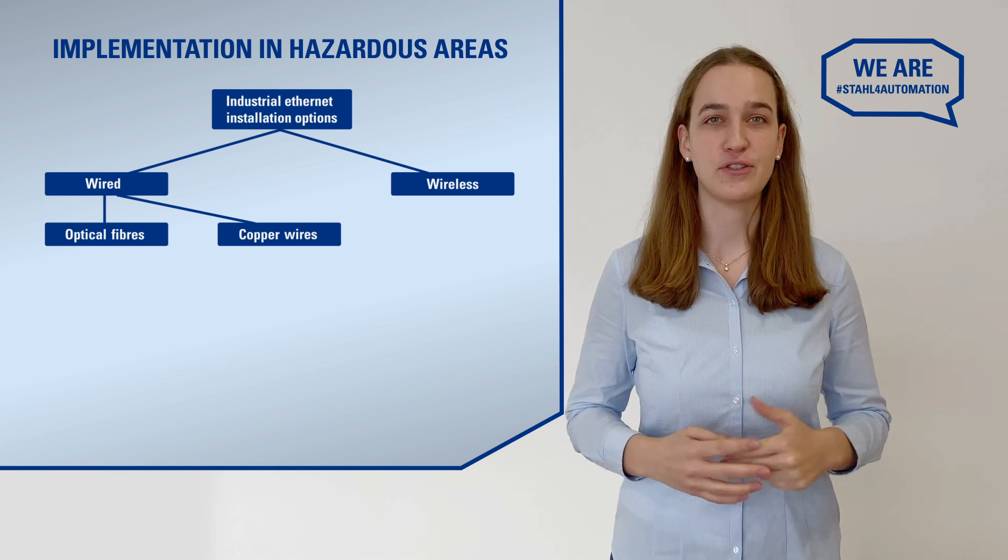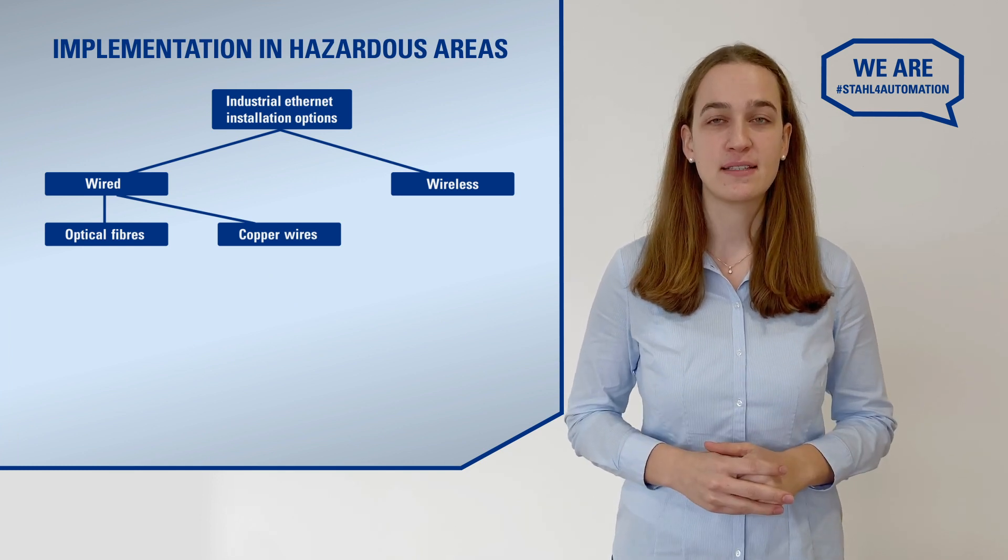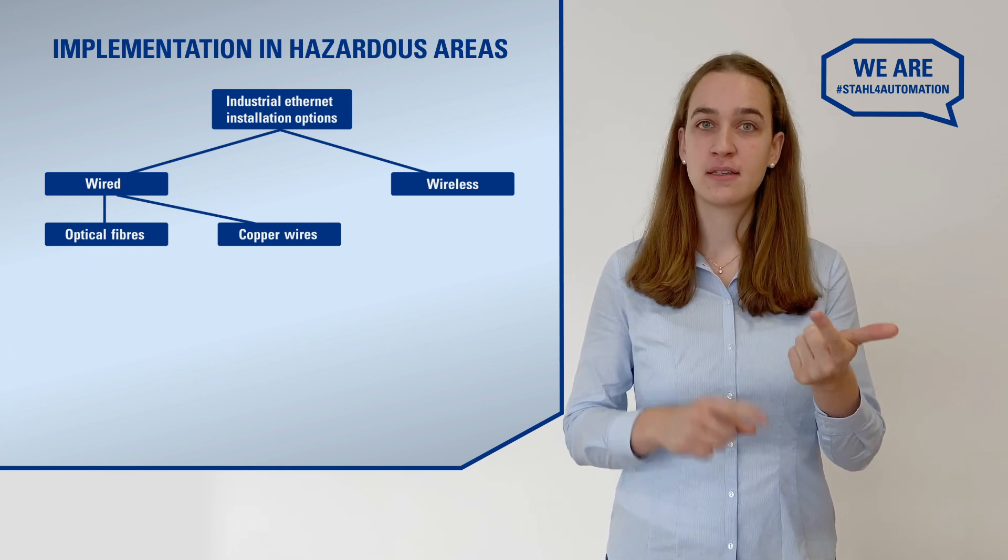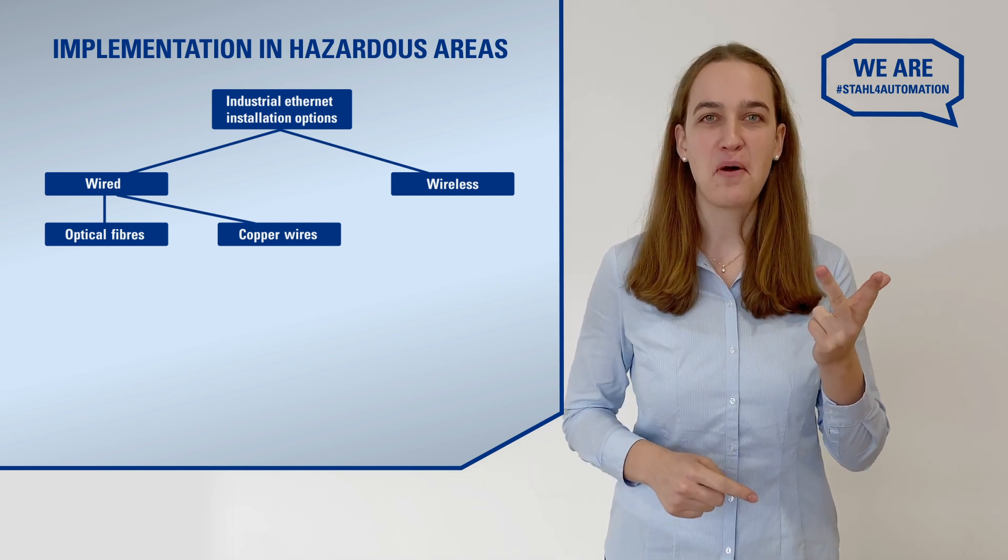It depends. There are three different ways to implement industrial Ethernet in hazardous areas using fiber optics, copper wires or radio waves to go wireless.